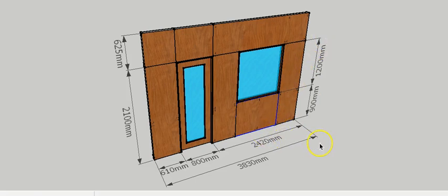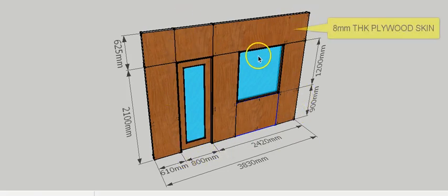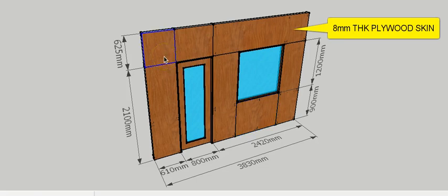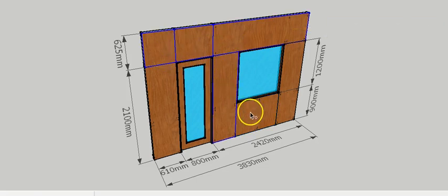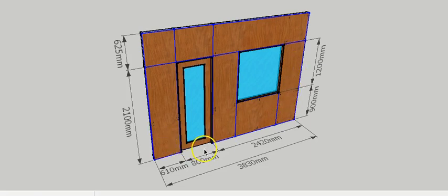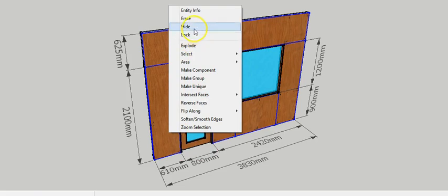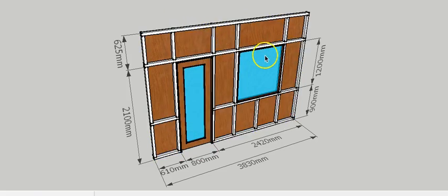As mentioned earlier, these are plywood skins on both sides of the partition. If we hide these panels, we can start seeing the inside of the frame.